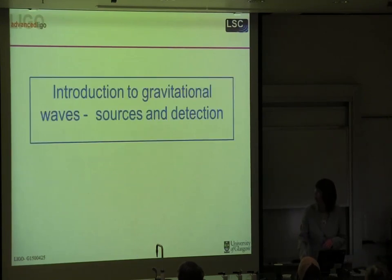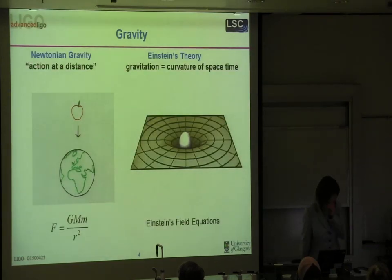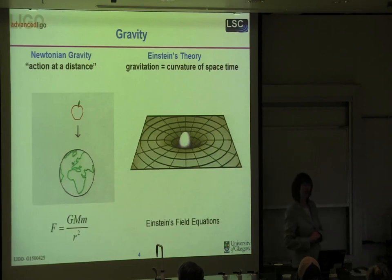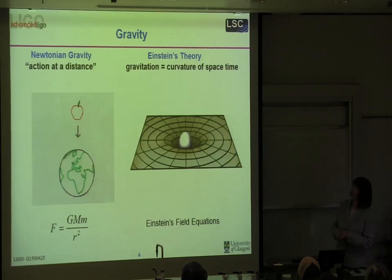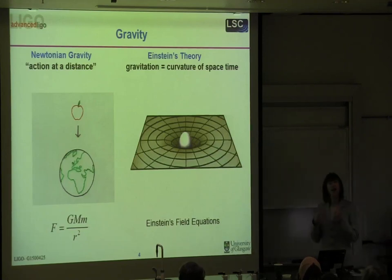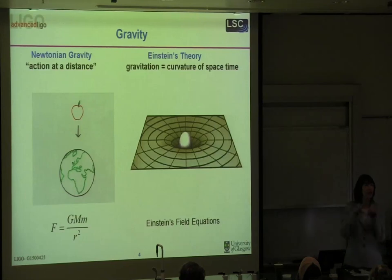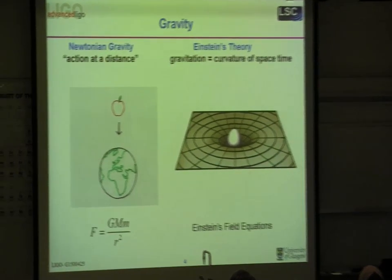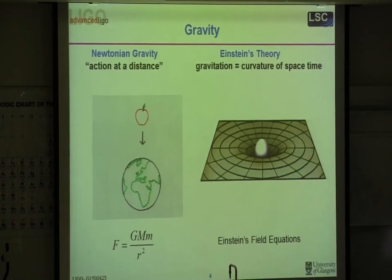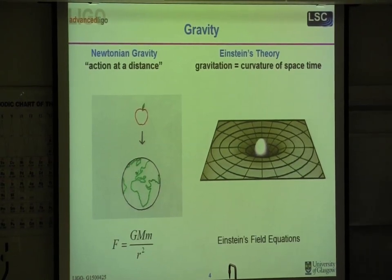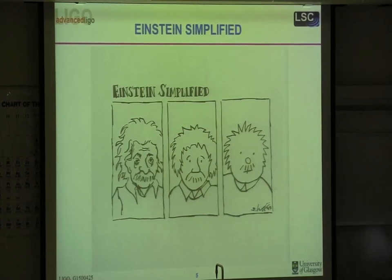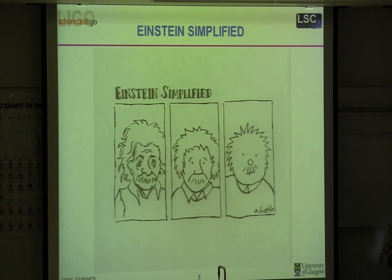We all know that over 300 years ago Newton gave us his theory of gravity, clearly explained by F = GMm/R². We understand why apples fall to the ground and why planets go around the Sun. That worked for 300 years, but it took the genius of Einstein to come up with an even deeper theory of gravity — in his theory, gravitation is the curvature of space-time.